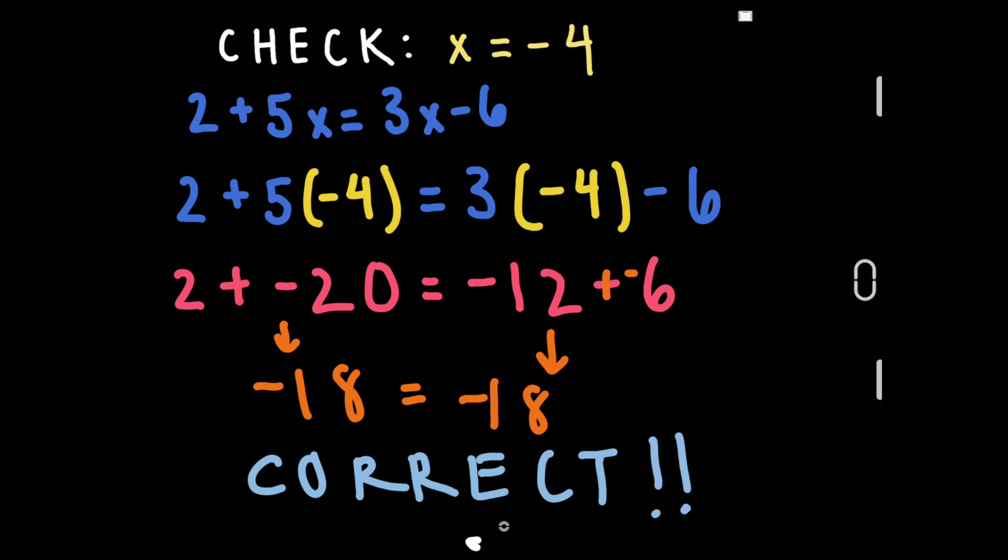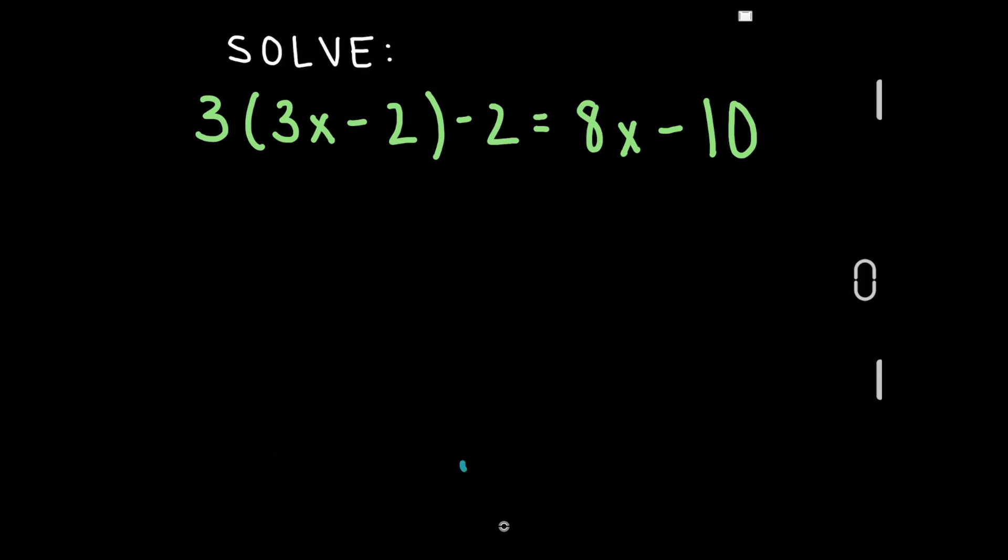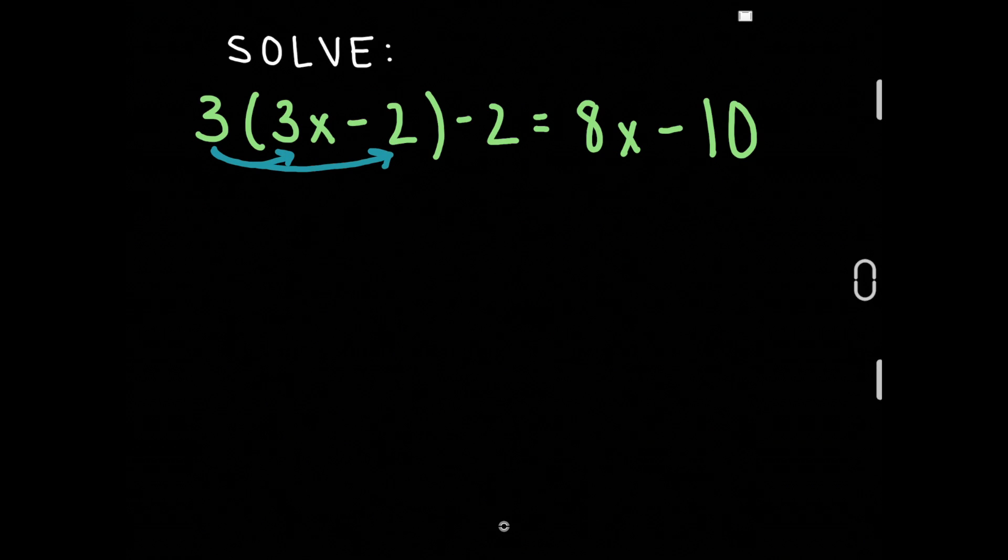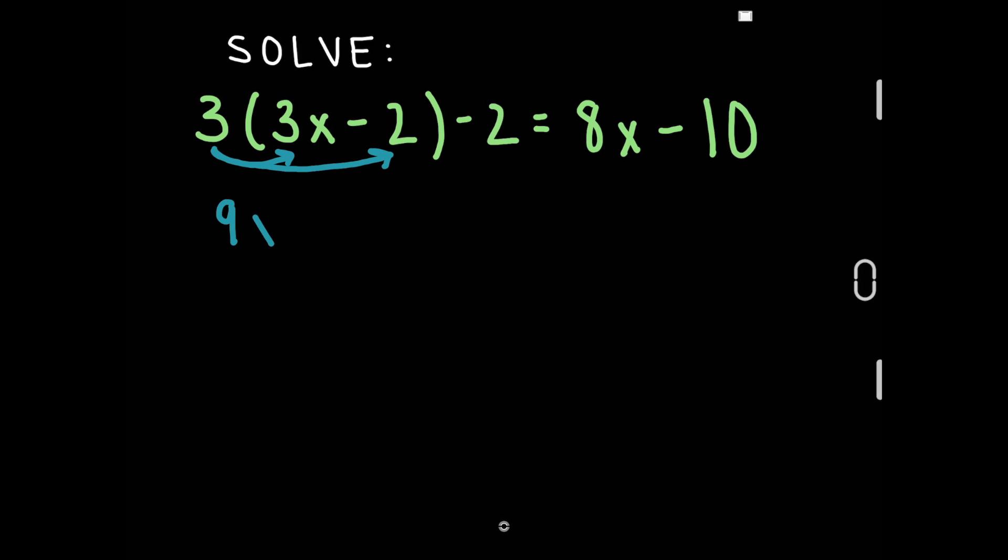Let's do another problem. In this problem, we first want to distribute the 3 to the numbers in the parentheses. 3 times 3x is 9x and 3 times negative 2 is negative 6.